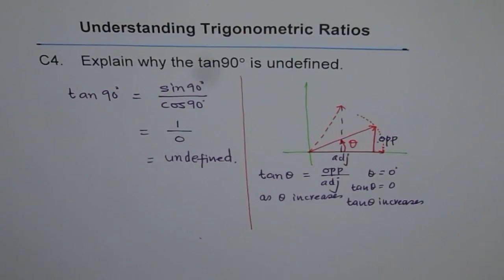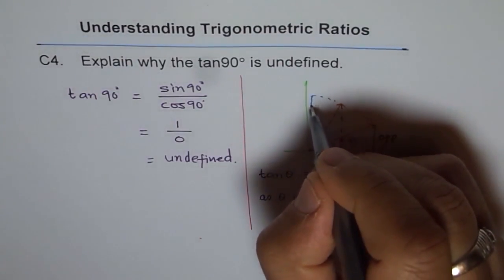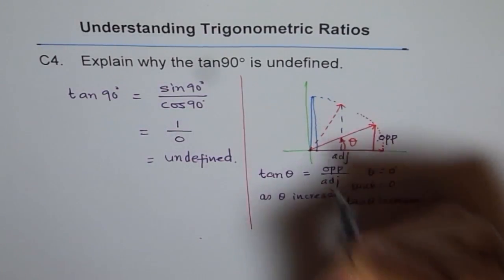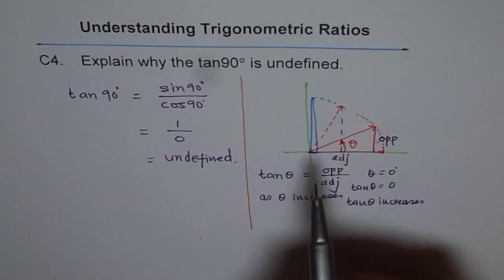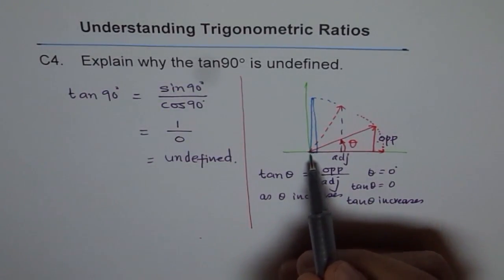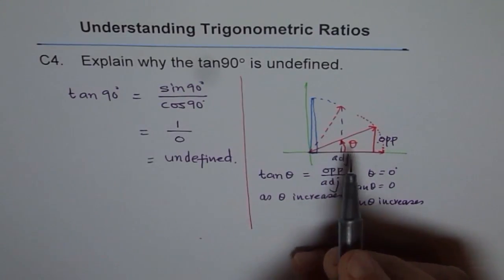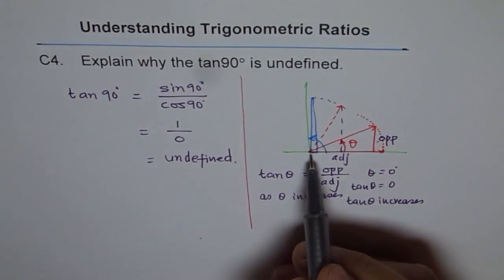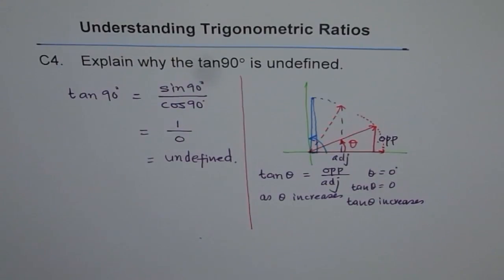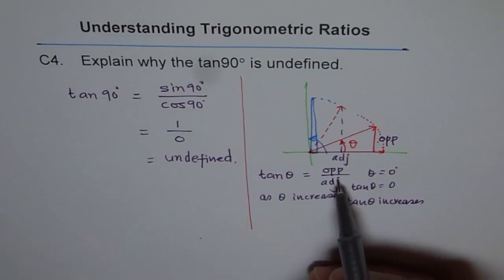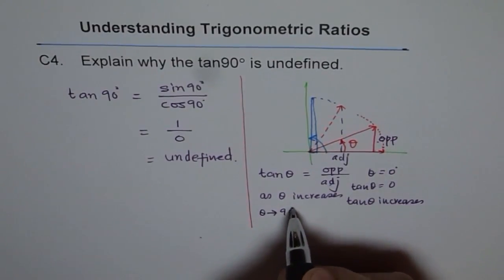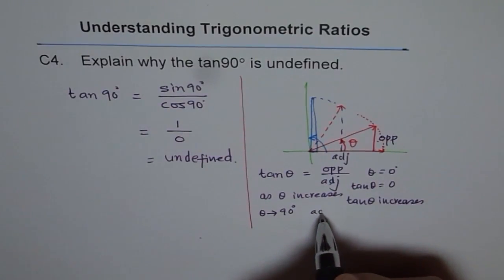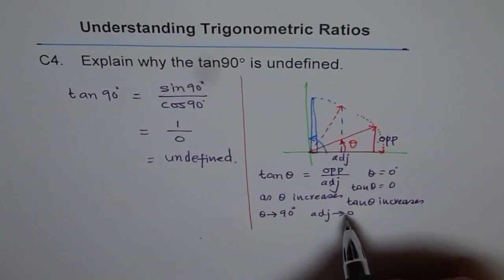Now let's look at the situation when theta is very close to 90 degrees. In this triangle, the opposite side is very long and the adjacent is extremely small — a very, very small fraction. If you divide by very small numbers, you expect very large numbers, and that is how tan theta behaves. As we approach 90 degrees, the adjacent side becomes very, very small — those small numbers are in your denominator. When you divide by small numbers, you get a very, very large number.